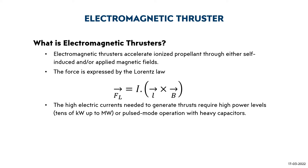Electromagnetic Thruster accelerates the ionized propellant through either self-induced or applied magnetic field. The force is expressed by the Lorentz law, which is given as F = I·L×B, where I is the current induced, L is the length of the channel, and B is the magnetic field. The high electric currents needed to generate thrust require high power levels, ranging from kilowatt up to megawatt, or pulse operation with heavy capacitors.